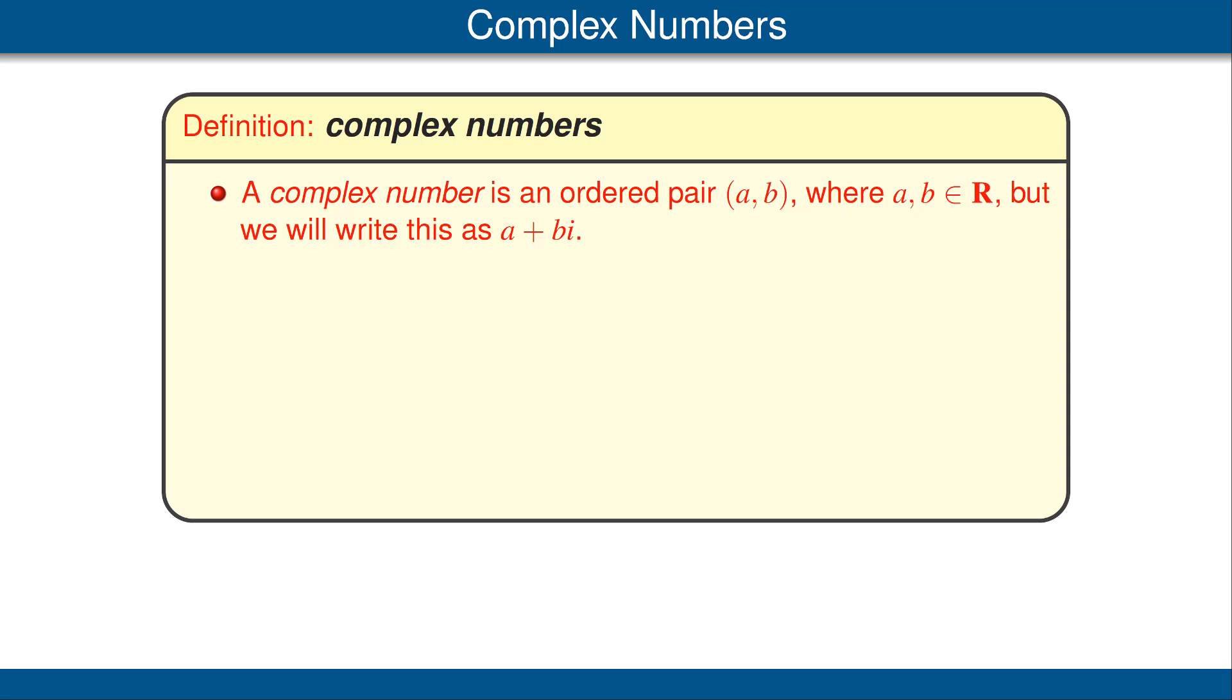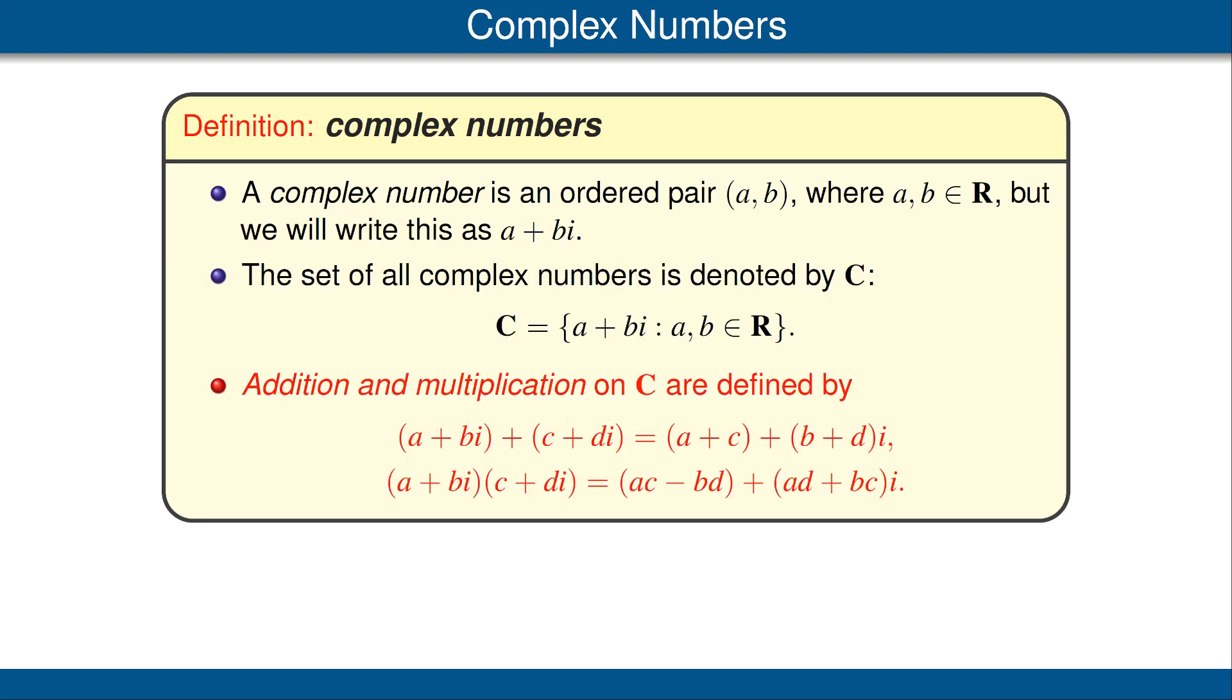The number a is called the real part of a + bi, and the number b is called the imaginary part of a + bi. The set of all complex numbers is denoted by C. The addition of complex numbers is defined in the obvious way. We just add the real parts and add the imaginary parts separately.